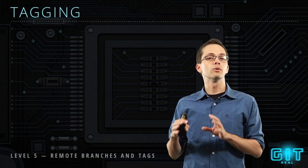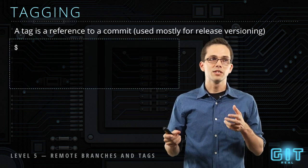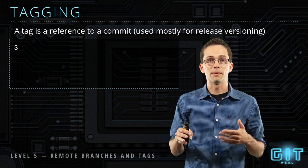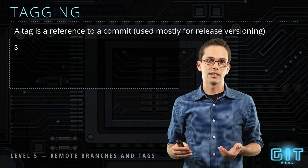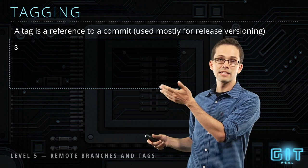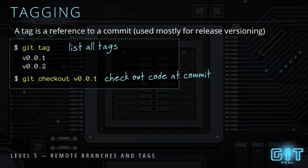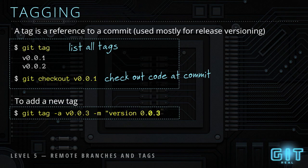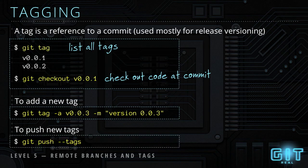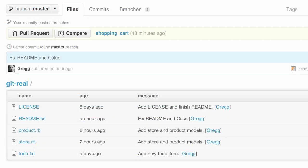Now that we've covered remote branches, let's talk about tags. Tags are basically a reference to a specific commit — a good way to jump back to what the code looked like at any given time. A lot of people use them for release versioning, tagging a good state as version 0.1. To list all tags, run `git tag`. To check out a tag, run `git checkout` followed by the tag name. To add a new tag, run `git tag -a` with a tag name and description. To push tags to a remote, you must specify `--tags`, otherwise tags remain local.